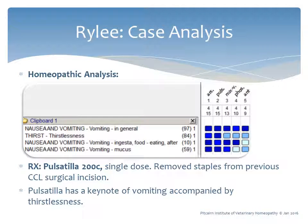Riley had eaten grass and vomited three more times that afternoon, and was currently thirstless, though normally she drinks water regularly. Her case was analyzed using a homeopathic software program for rapid analysis. Symptoms are translated into rubrics in the rows, and matching homeopathic remedies are listed in columns: ARS for arsenicum, PULS for pulsatilla, NUXV for nux vomica, and PHOS for phosphorus. The intensity of color and remedy order identifies which most closely matches the patient's symptoms.